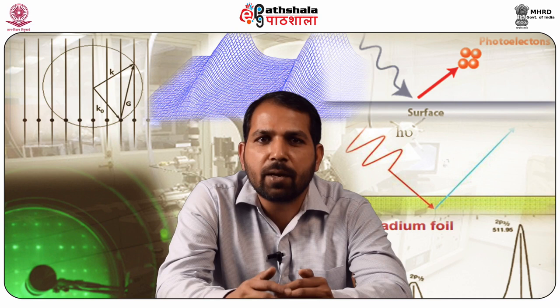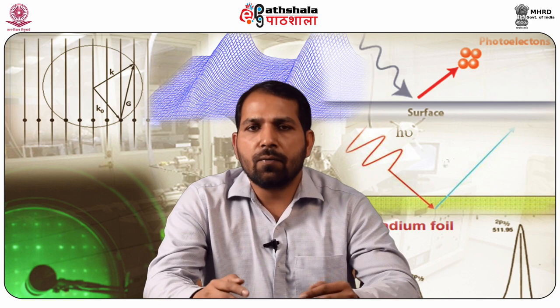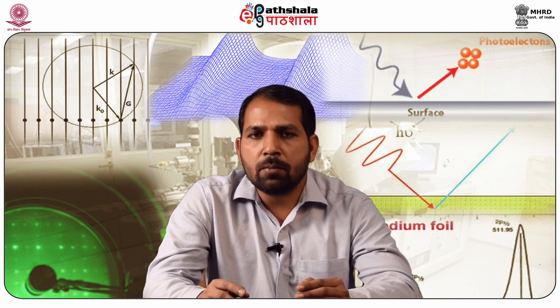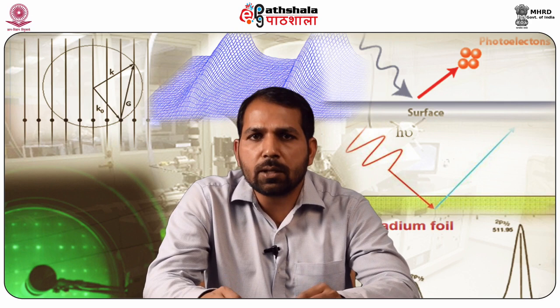The tunneling current varies about one order of magnitude per angstrom. Therefore, the normal tip-sample distance in STM experiments, typically with a tunneling resistance of one megaohm to one gigaohm, is one to four angstroms.